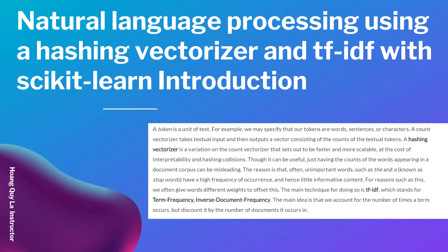Through hashing collisions, just having the counts of words appearing in a document can be misleading. The reason is that often unimportant words such as 'the' and 'and', known as stop words, have a high frequency of occurrence and hence little informative content. For reasons such as this, we often give words different weights to offset this.